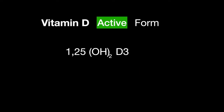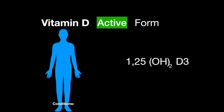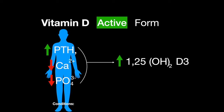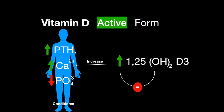The active form of vitamin D is 1,25-dihydroxy-D3. The conditions that stimulate it to increase in concentration are high parathyroid hormone concentration and low concentrations of calcium and phosphate. 1,25-dihydroxy-D3 works to increase calcium concentrations and regulates its own concentration in a negative feedback loop.